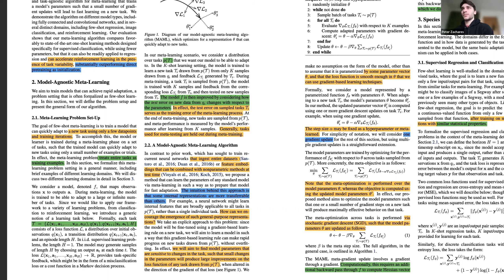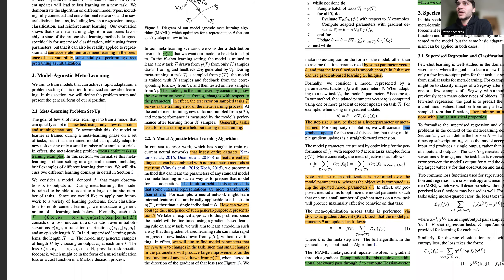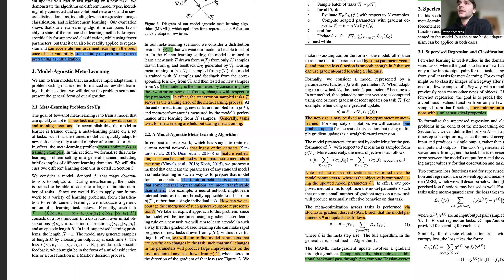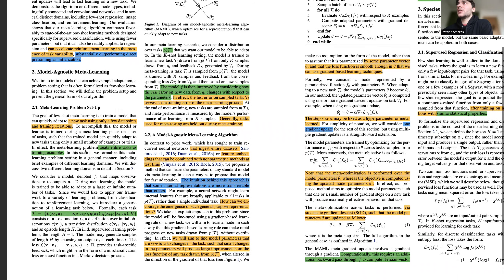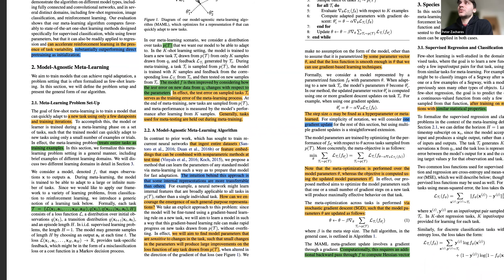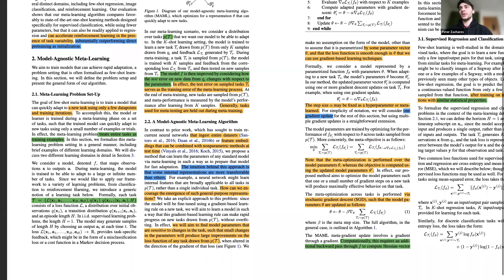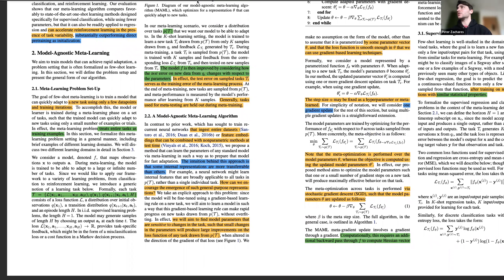They describe their learning process as maximizing the sensitivity of the loss function of new tasks with respect to the parameters. Essentially, they're trying to find a point in parameter space from which large improvements can be made across many different tasks with just a few gradient updates. Another fundamental idea is that this method is essentially learning a generalizable initialization of the model for test tasks—the parameters learned from meta-learning serve as the initialization that will be used for the new task.